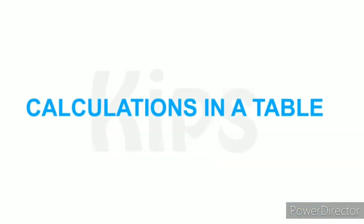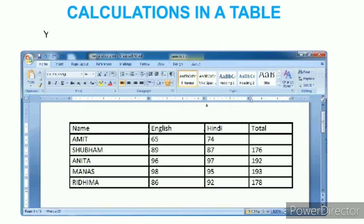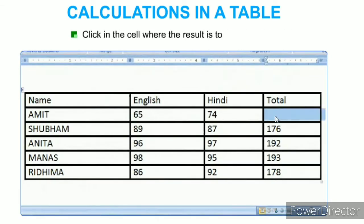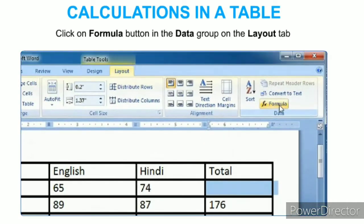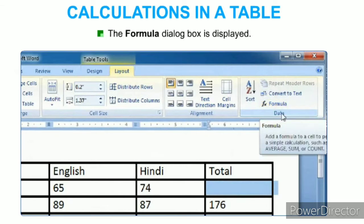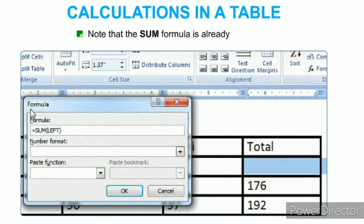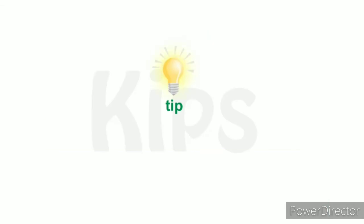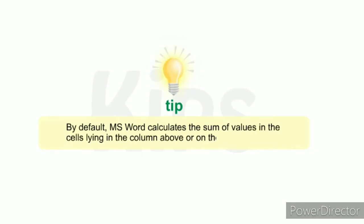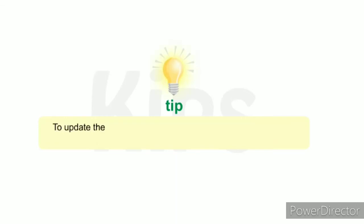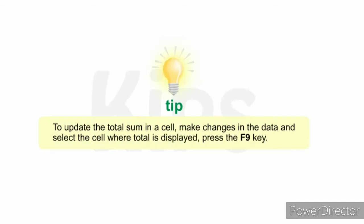To perform calculations on numeric data in a table, click in the cell where the result is to be displayed, then click the Formula button in the Data group on the Layout tab. The Formula dialog box is displayed with the SUM formula already shown; click OK. By default, MS Word calculates the sum of values in the cells above or to the left. To update the total, make changes in the data, select the cell where the total is displayed, and press the F9 key.